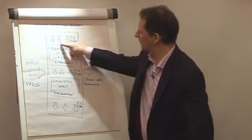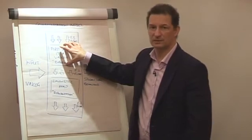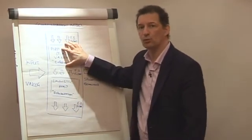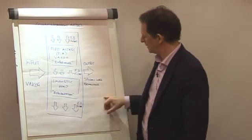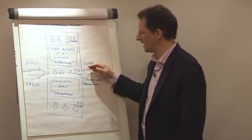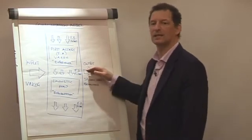At this first access experience stage, this is deep structure. This contains all the information. At the output stage, this is surface structure. This has been heavily deleted, heavily distorted, and heavily generalized. And this information, if you like, is very, very thin.